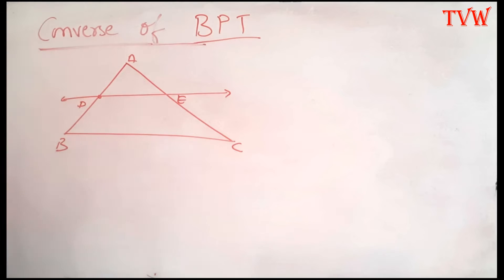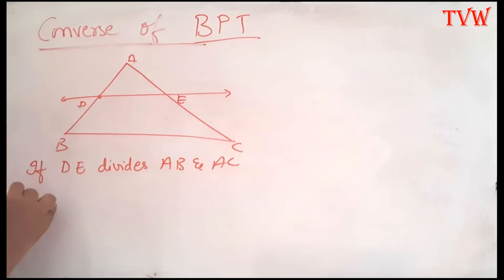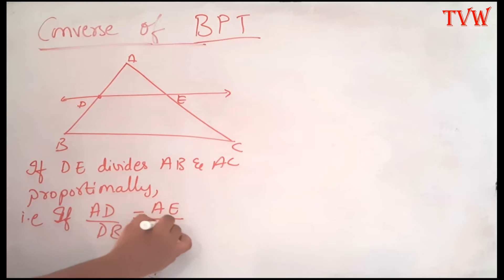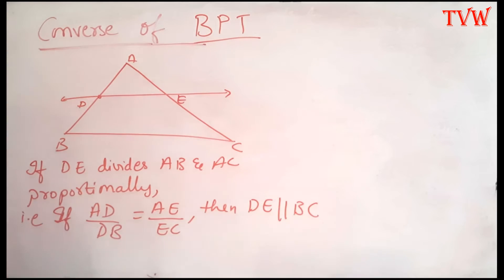Now, the converse of BPT is if there is a line that divides the sides proportionally, then it has to be parallel to the third side. So here we say if DE divides AB and AC proportionally, which means if AD divided by DB is equal to AE divided by EC, then DE is parallel to BC. That's what the converse of basic proportionality theorem says.